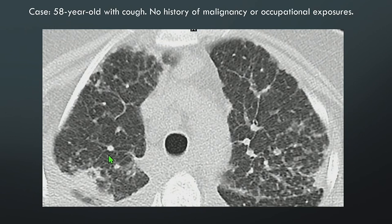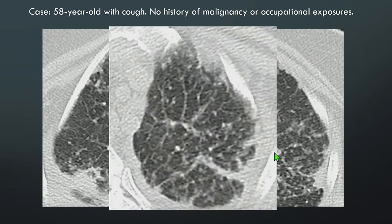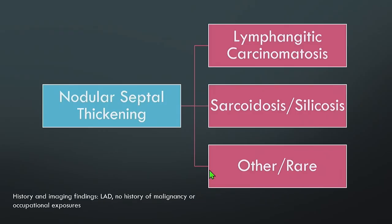Another case: a 58-year-old with cough and no history of malignancy or occupational exposures. There are too many lines — interlobular septal thickening with nodularity not only along the septa but also along the left major fissure. At the left lung apex there is also subtle septal thickening with nodularity. With this clinical history, this is a case of sarcoidosis.